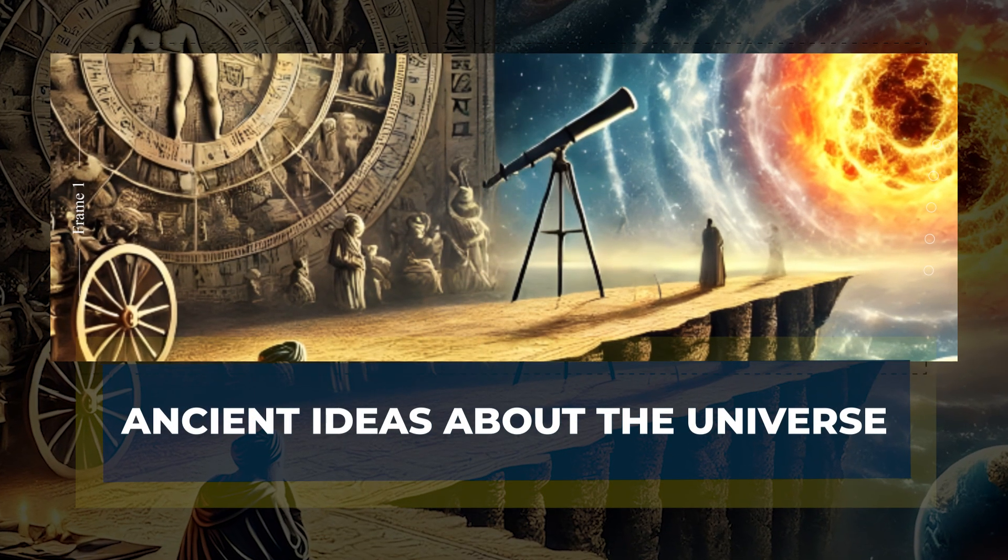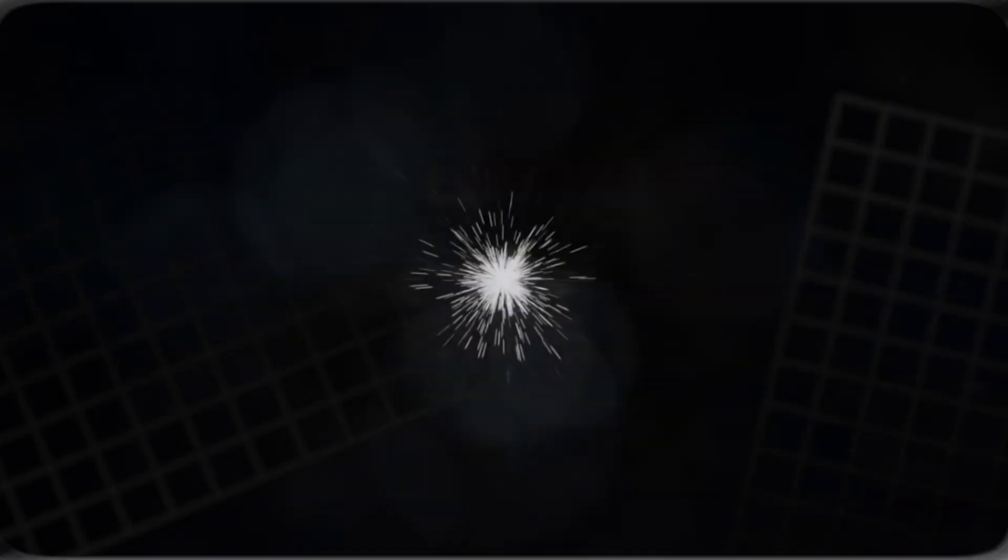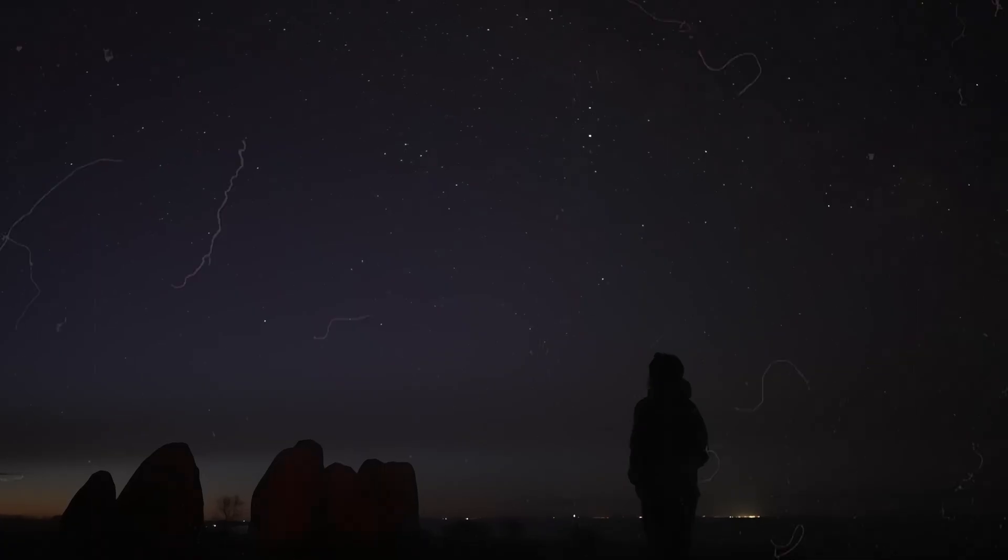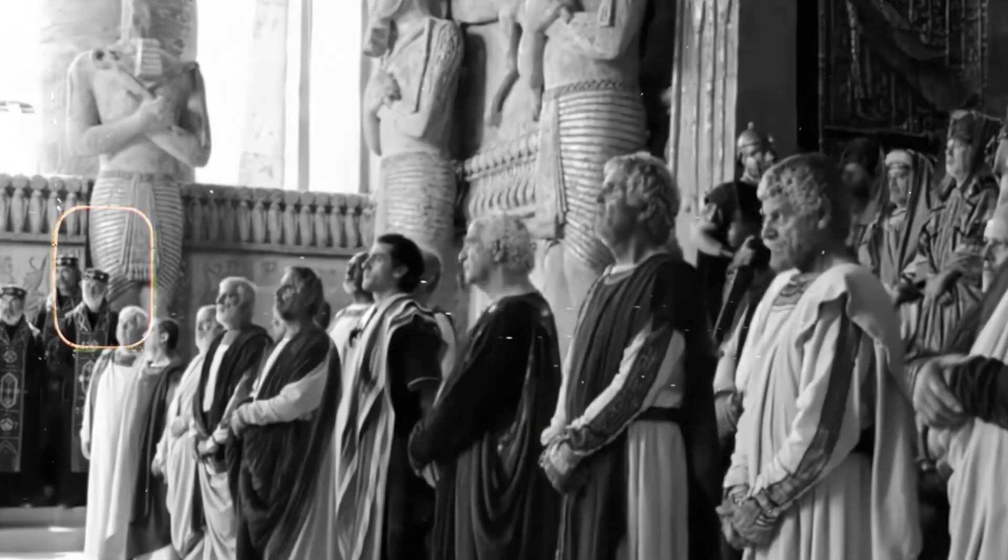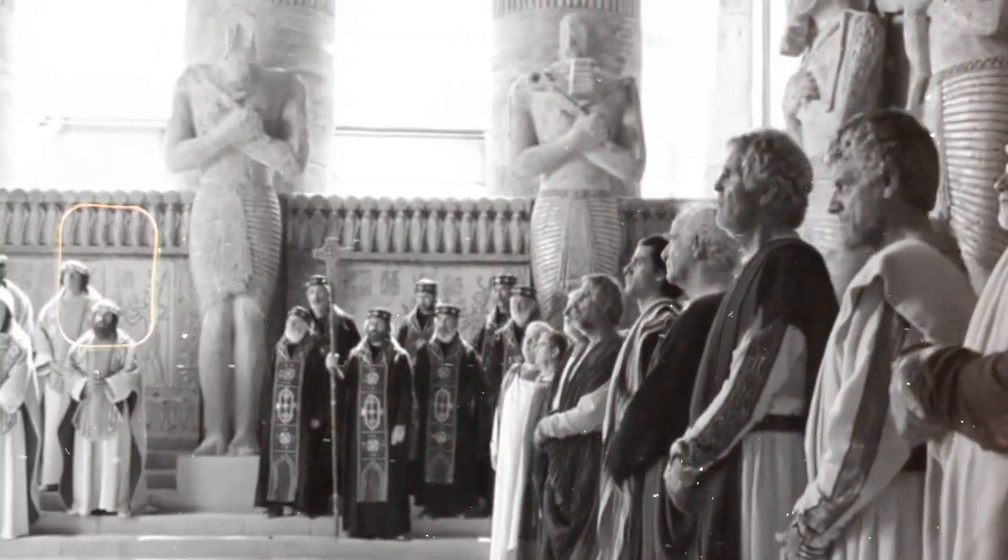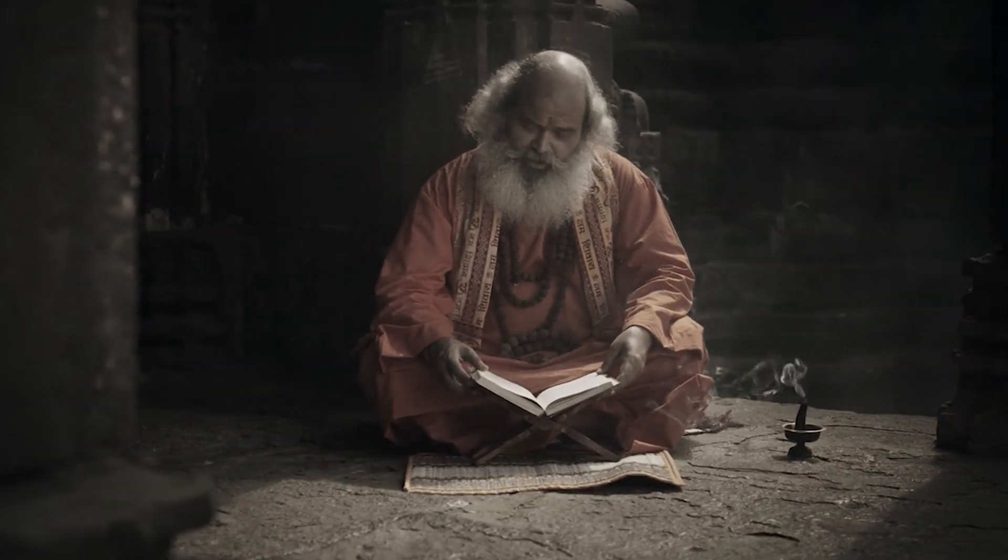Ancient Ideas About The Universe. To understand what the Big Bang truly was, we must step back and see how people once explained the universe. For thousands of years, humans stared at the stars and wondered where it all came from. The ancient Greeks thought the universe had always existed and had no beginning. Hindu thinkers imagined endless cycles of creation and destruction.